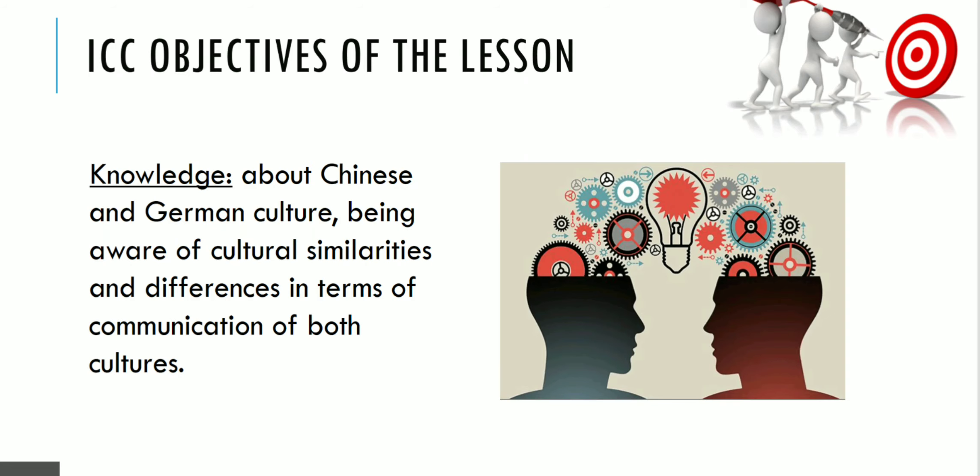Knowledge is about Chinese and German culture — being aware of cultural similarities and differences in terms of communication of both cultures. To properly explain my lesson's critical incident, I will tell you about the one I have chosen. There will be a task about a German boy who went to China to study. While sitting in a local restaurant, a Chinese man came and sat next to him, and they became very close friends.